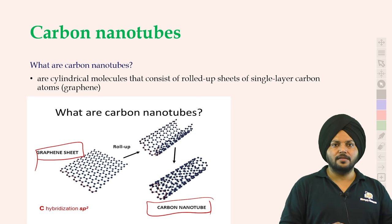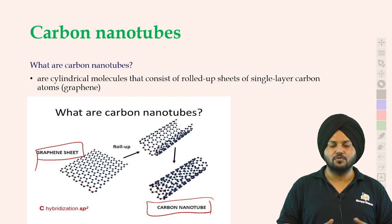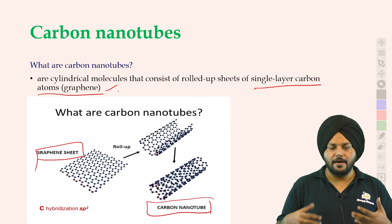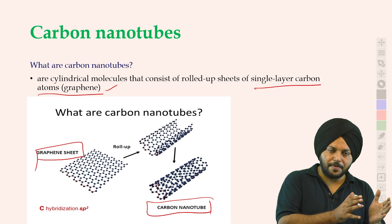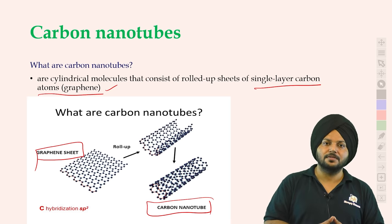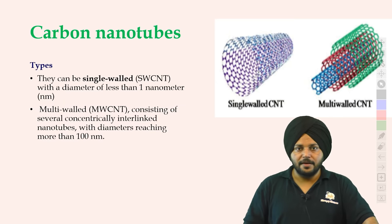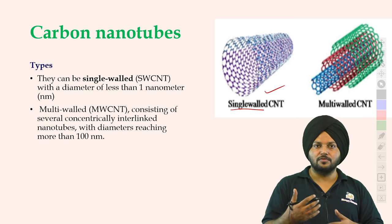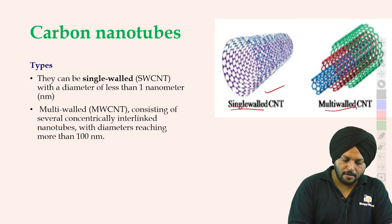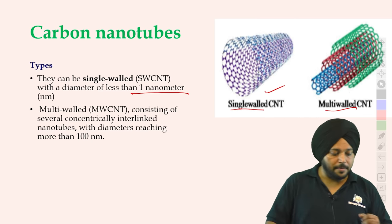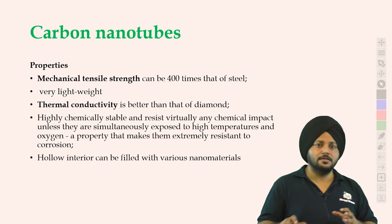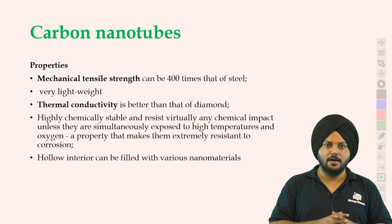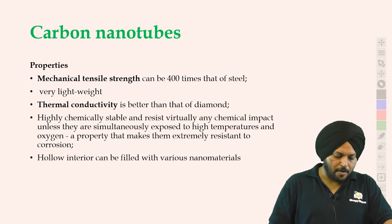Basically इन दोनों के अंदर कोई बड़ा difference नहीं है। जब graphene की sheets बनाते हैं, उसको roll करते हैं, tube बनाते हैं — उसको बोलते हैं carbon nanotube। यह single atom carbon nanotube है जो basically graphene से बनी है। अब graphene की जो properties हमने देखी थीं, वही properties इस पर आएंगी। Single wall carbon nanotube का diameter less than 1 nanometer होता है। अगर बहुत सारी tubes के अंदर tube रखकर cover किया तो multi-wall carbon nanotube कहते हैं।